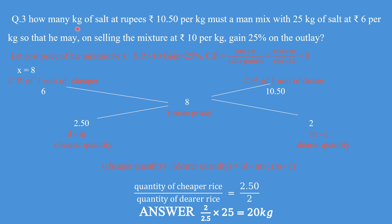Question 3 states: in how many kg of salt at rupees 10.50 per kg must a man mix with 25 kg salt at 6 rupees per kg, so that by selling the mixture at 10 per kg he gains 25% on the outlay? One category of salt costs 10.50 — that is the expensive salt — and the other costs 6 per kg — that is the cheaper salt. We fix these: cost price of cheaper unit is 6, cost price of the dearer is 10.50.